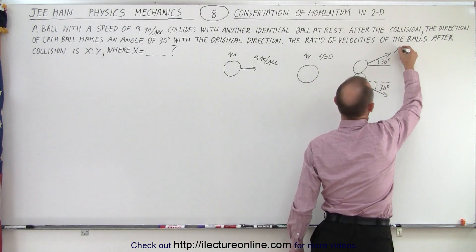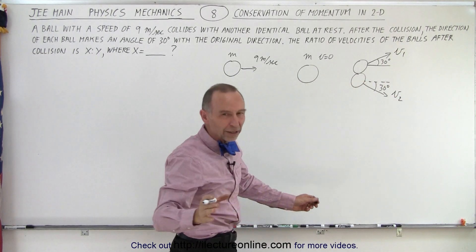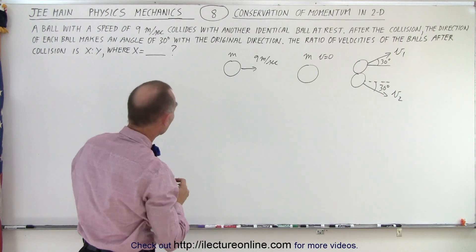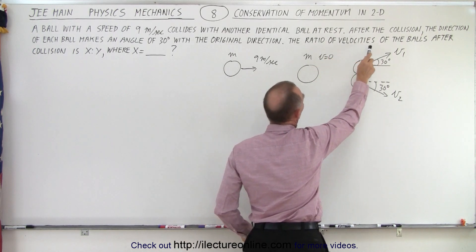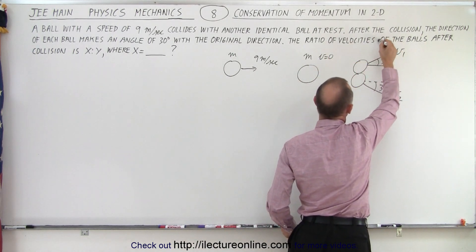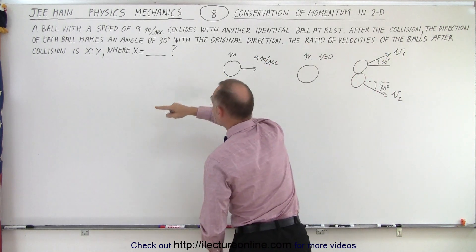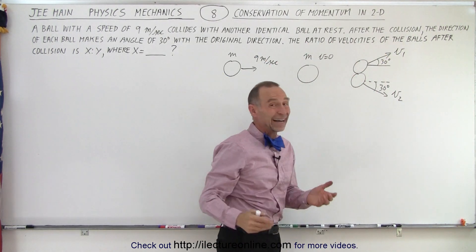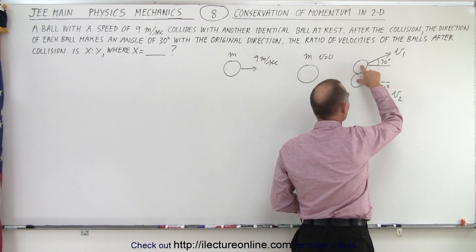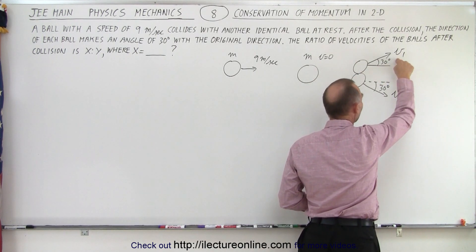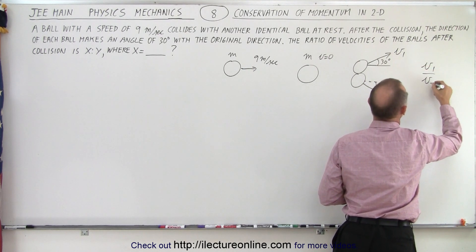So let's say that this is velocity one and this is velocity two. Now what are they trying to get us to compare? But notice it says the ratio of velocities of the balls, plural, after the collision is x to y. I think what they're asking us to do is these are the two balls after the collision, these are the two velocities after the collision, and they want us to know v1 to v2.